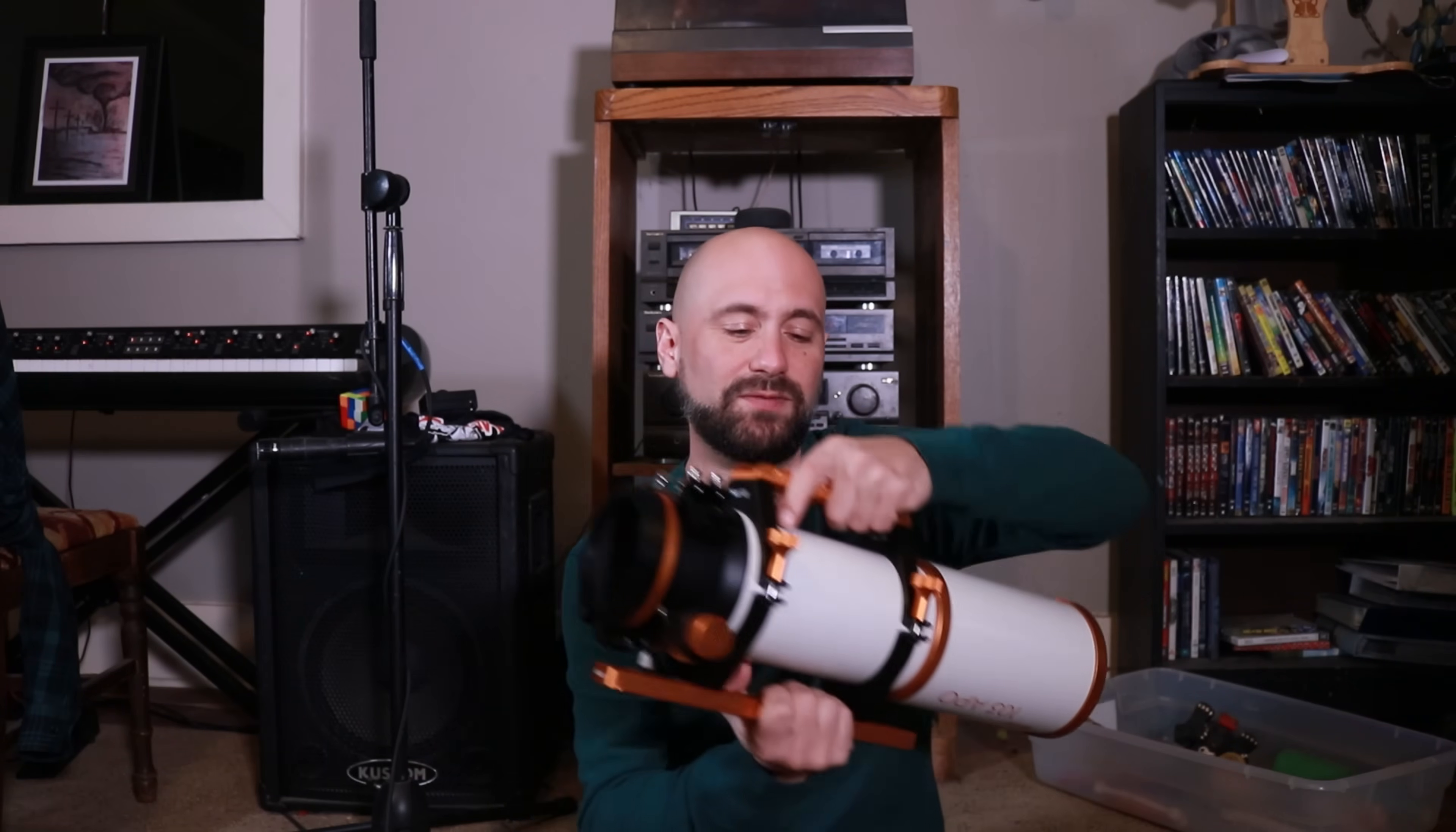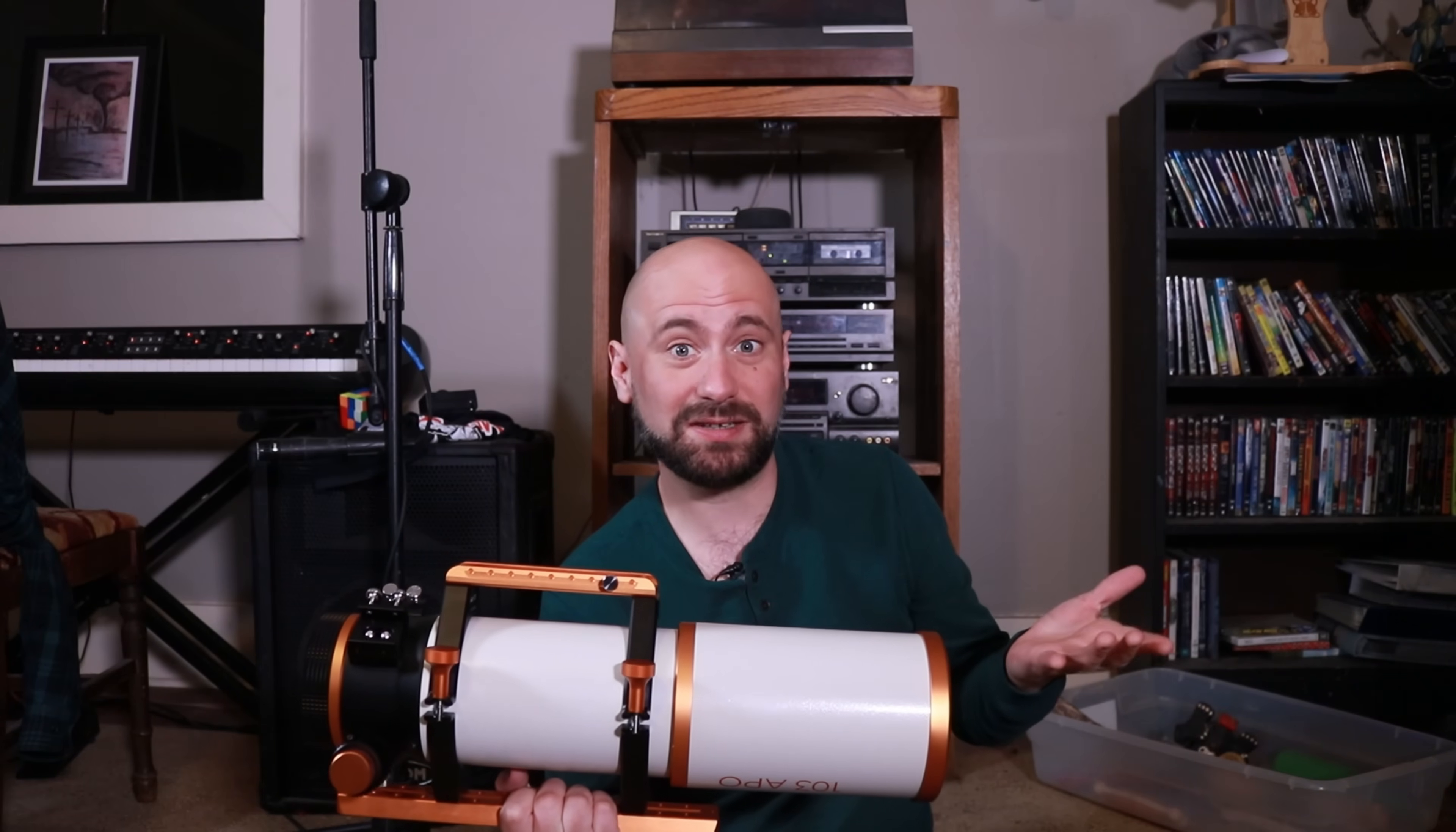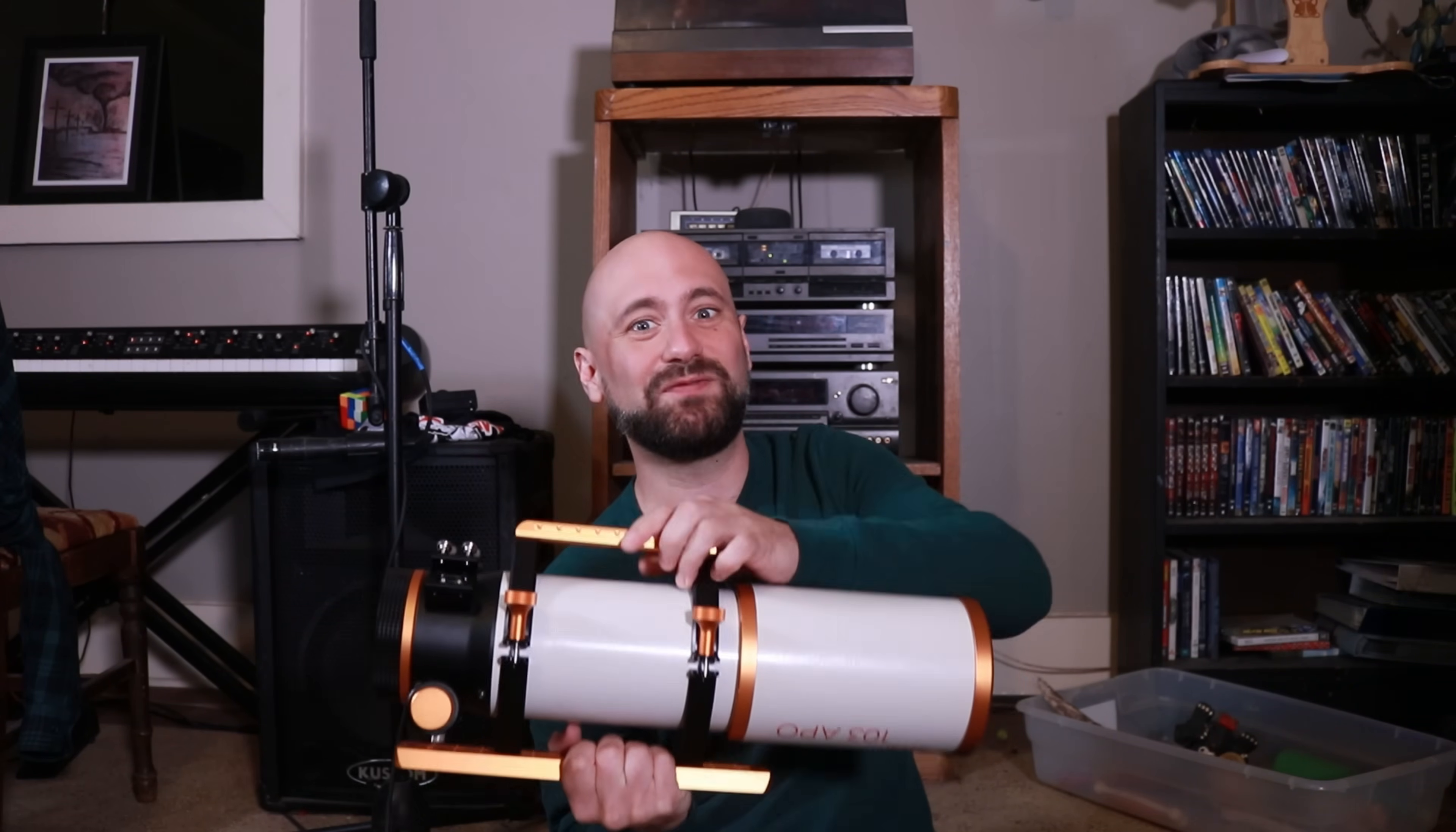Now we've got a much shorter telescope, and you can take that 0.6 reducer and just screw it in right back here. Another advantage of this configuration is it's compatible with Bino viewers, so if you've got some of those or want some of those for visual astronomy, it works really well in this configuration.